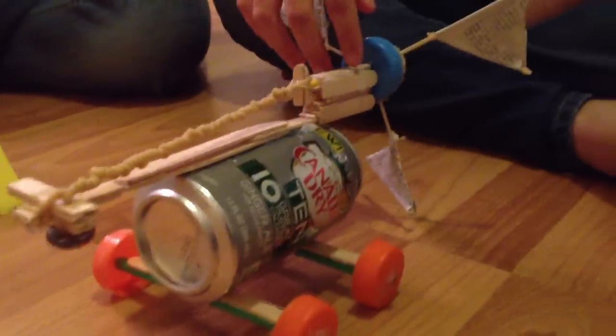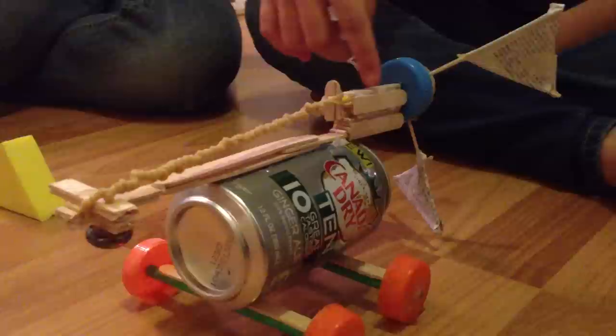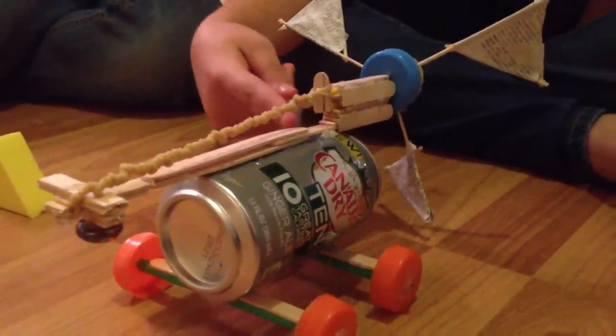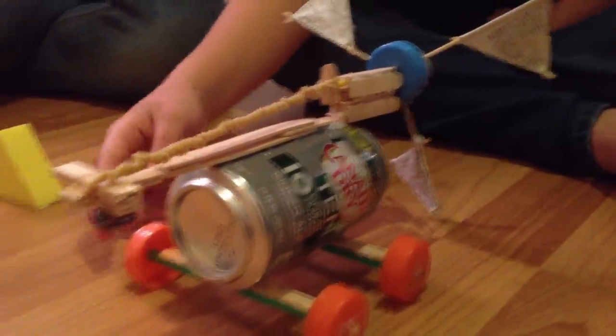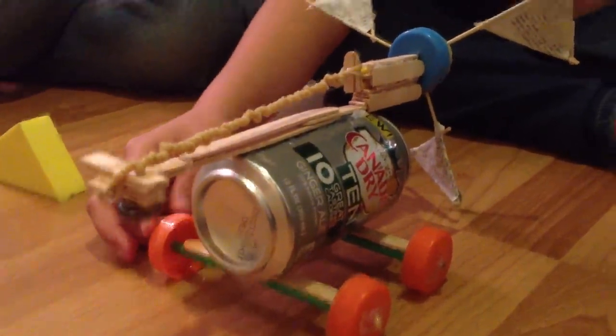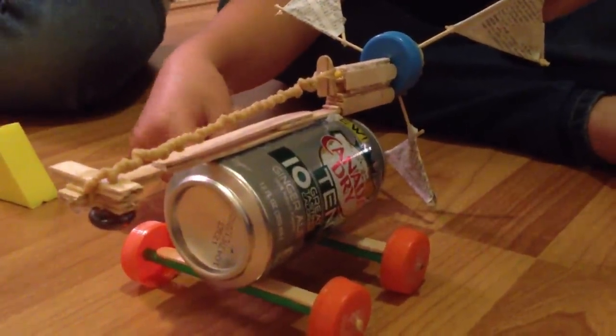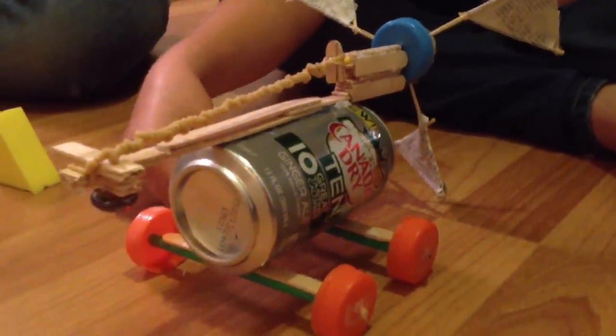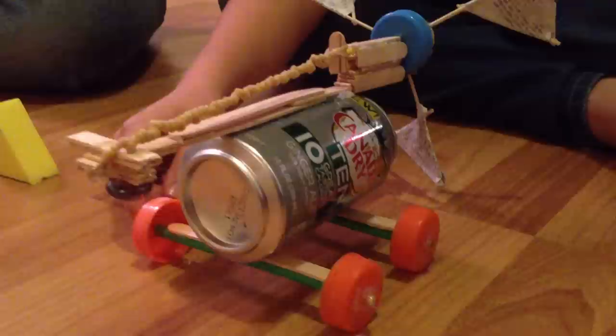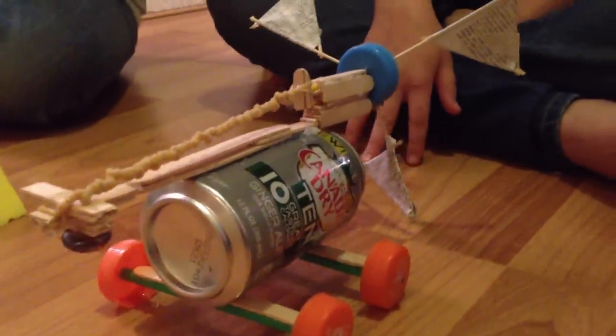We had a lot of popsicle sticks. So we broke the popsicle sticks and we glued them together. And then we found some Gatorade caps and glued them onto the popsicle sticks and made a hole in them so we could put a little bit of wood through them so they would stick on.